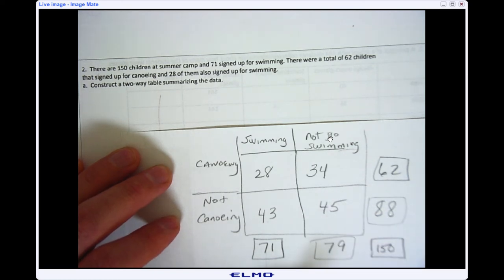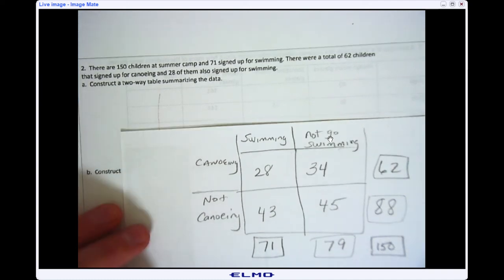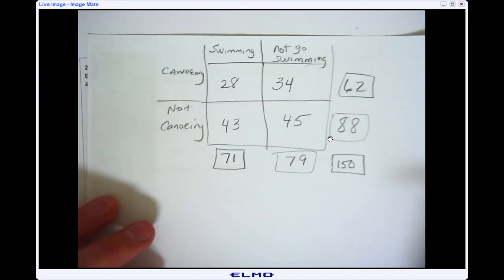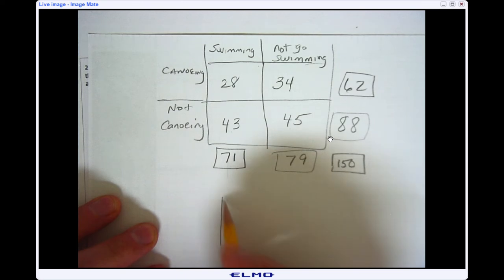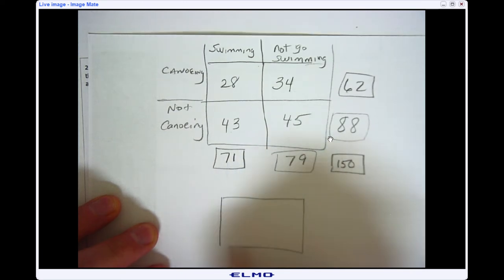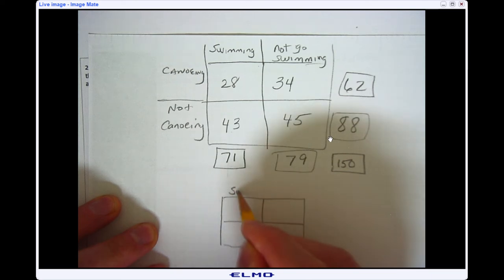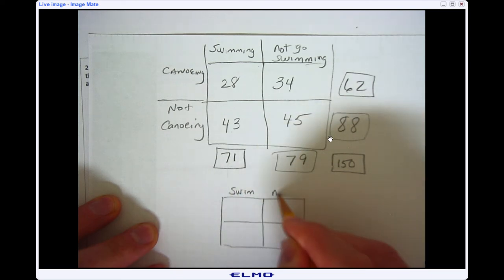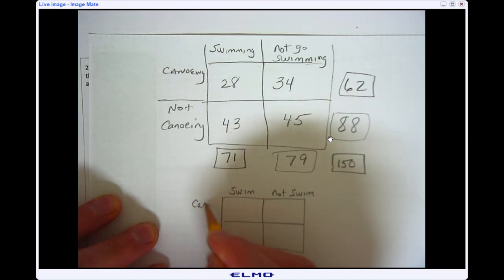Now, if I turn this into a relative frequency table, what I would do is I'm going to take these same numbers. I'm going to go ahead and make another two-by-two graph here. And again, I'm just going to abbreviate. This one is swimming and not swimming. And this is canoeing and not canoeing.